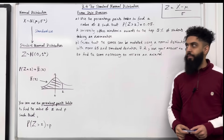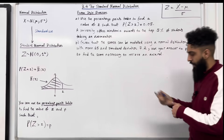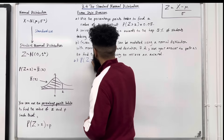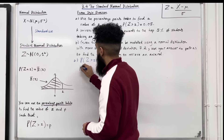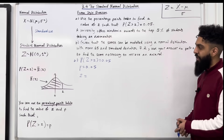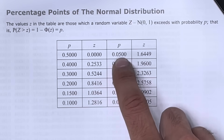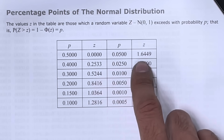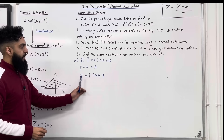Moving on to an exam-style question. Part A: use the percentage points table to find a value of Z such that probability capital Z is greater than lowercase z is equal to 0.05. We notice that the P value is 0.05. Using the percentage points table of the normal distribution, found on page 34 of the formula booklet, we locate P equals 0.05. The corresponding lowercase z value is 1.6449.